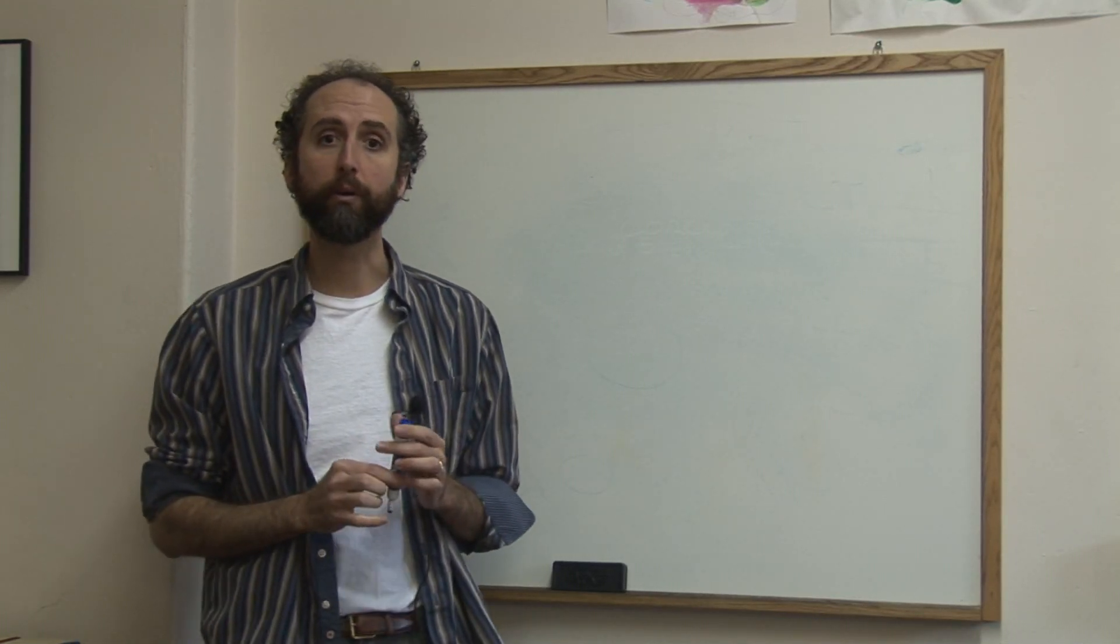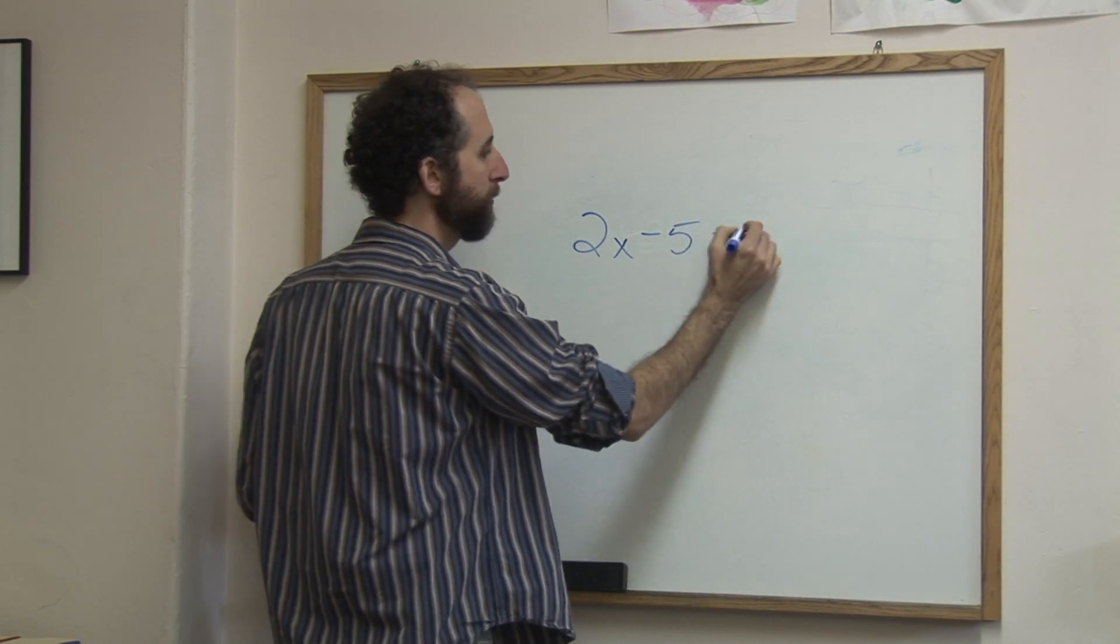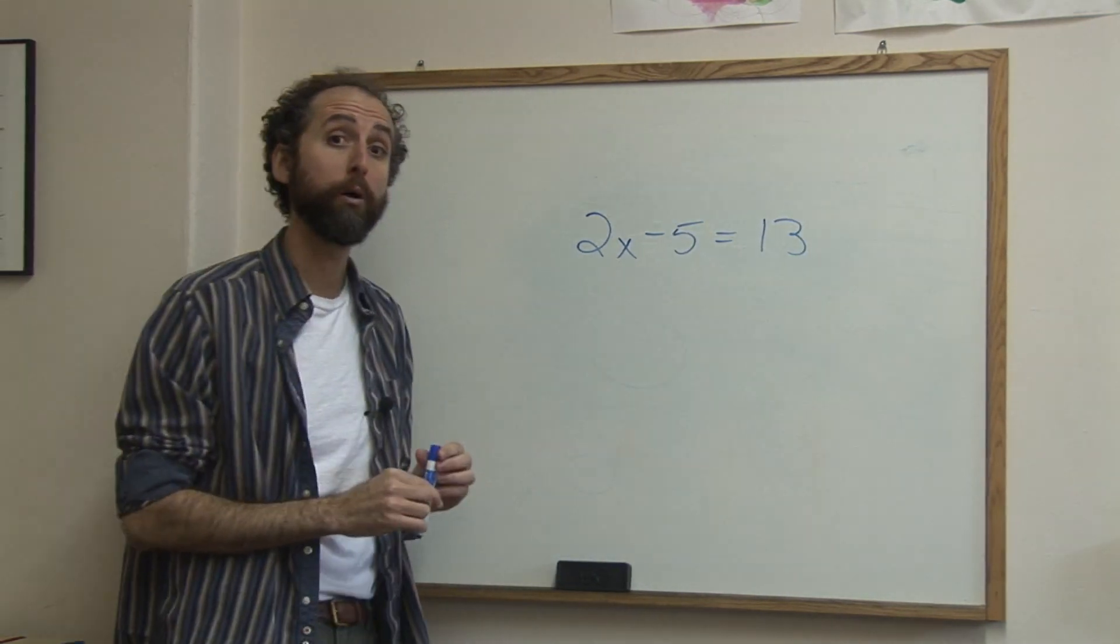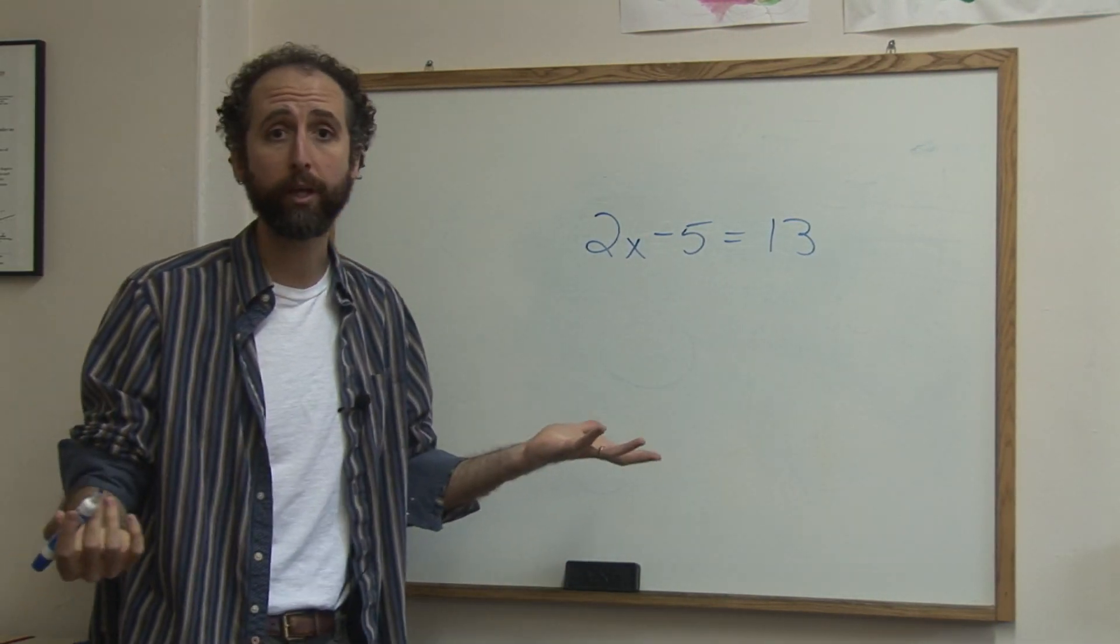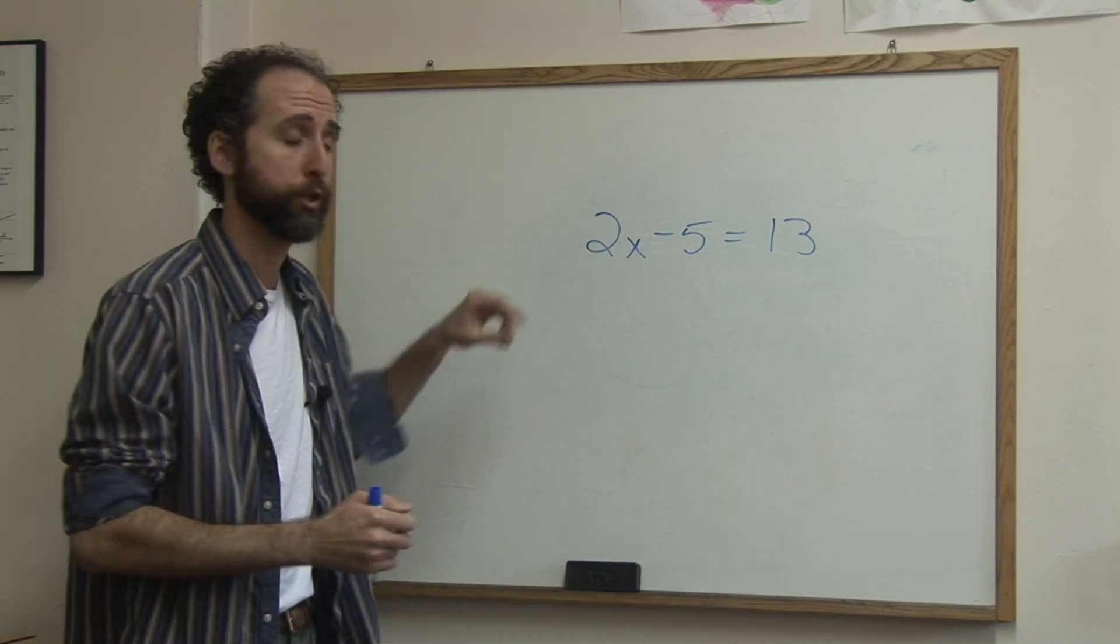Let's take a look at the steps for solving a linear equation. So let's see, 2x minus 5 equals 13, and we want to solve this. Now first of all, solving it just means what is x equal? There's going to be a particular number that x equals in this equation.